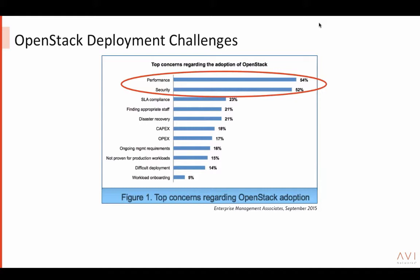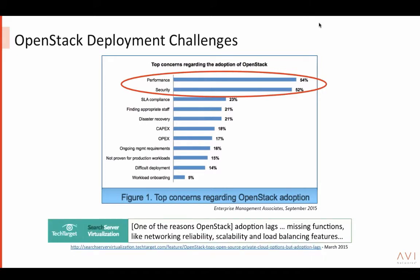One survey last fall called out performance and security among the top two concerns for wider adoption of OpenStack. A more recent article from Target talked about why OpenStack adoption is lagging because of missing functions such as network reliability, scalability, and load balancing.